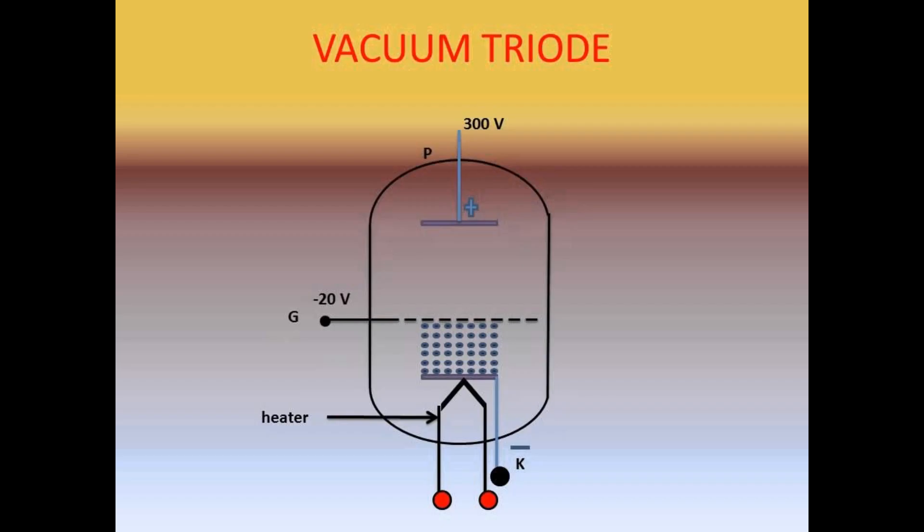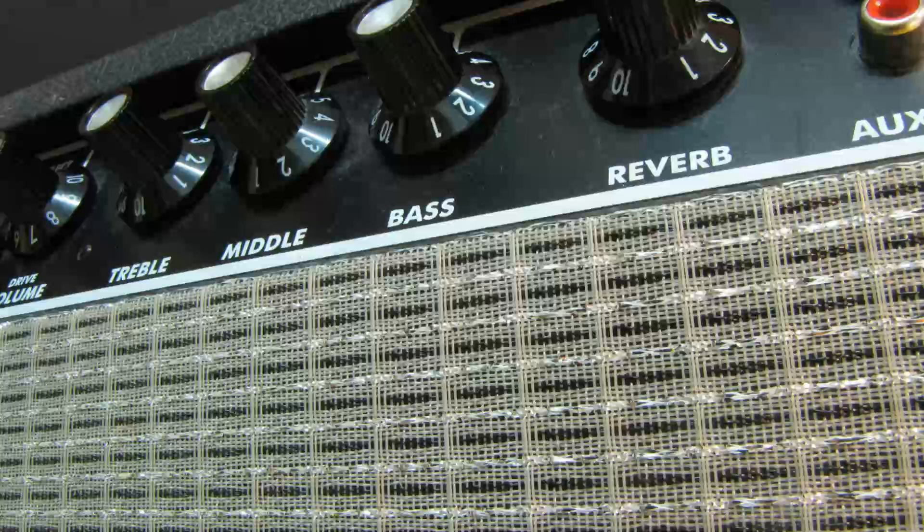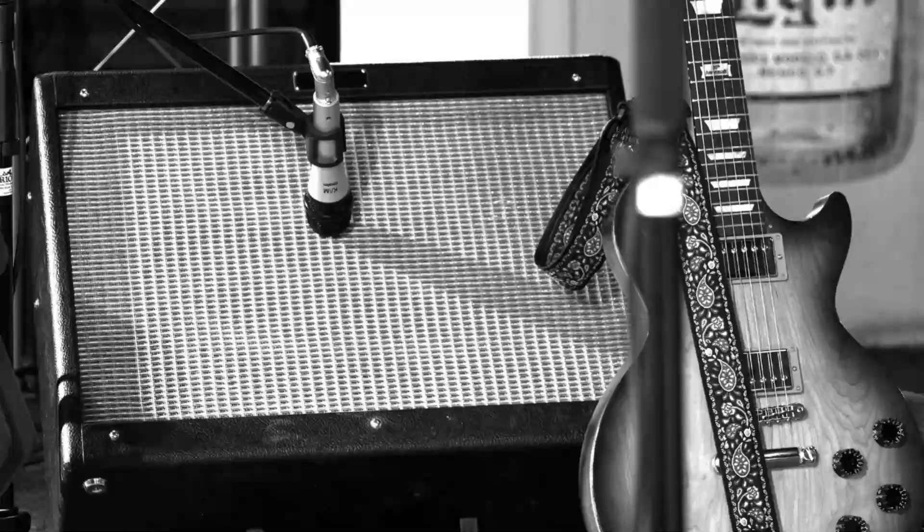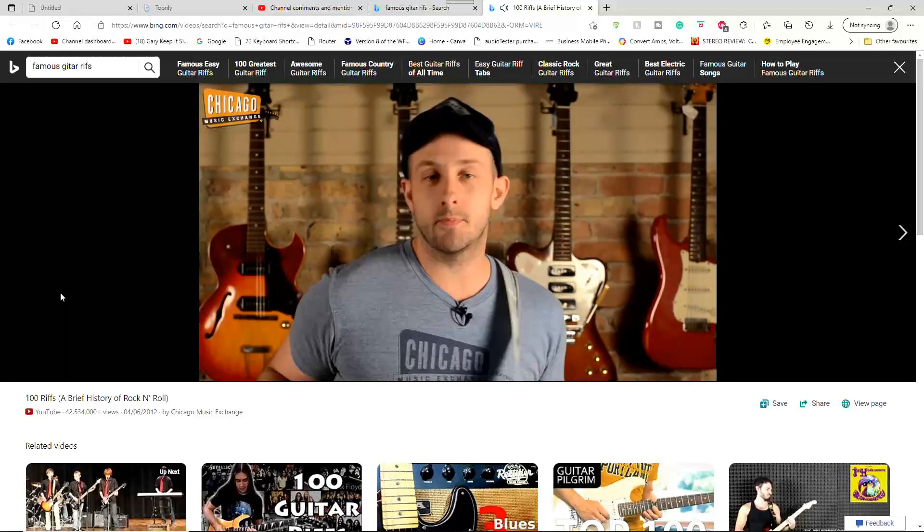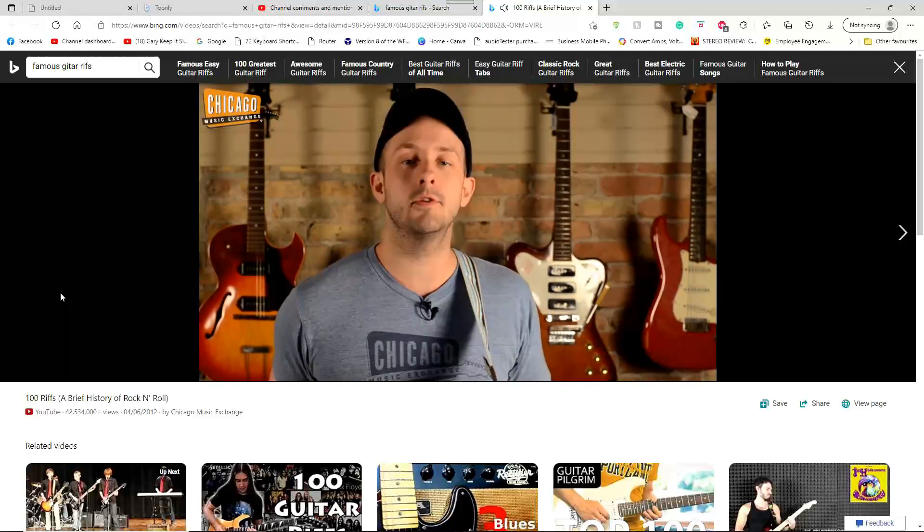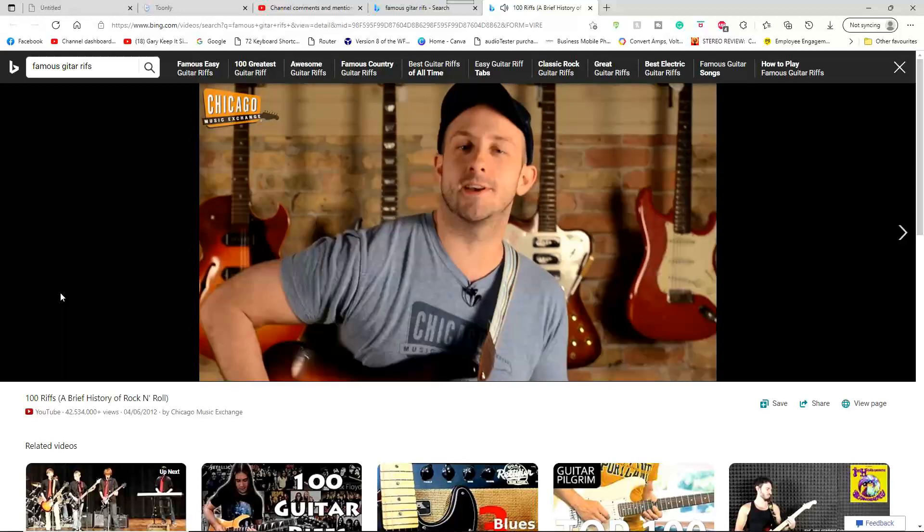One of the things that valves actually win at is that when you overdrive them, they don't cut off sharply like a transistor does. They sort of smooth it off. They sort of don't quite get there and they sort of make a mess of the signal. But they don't make a mess that's unpleasant. That's why you get the guitar riffs. Here's a little clip from one of the YouTubers. Hey everyone, Alex from the Chicago Music Exchange here. Today I'm going to be playing a brief history of rock and roll and 100 riffs in a single take. Here we go.